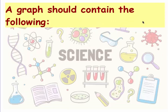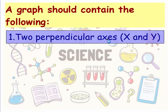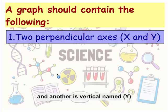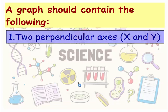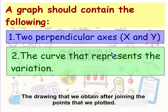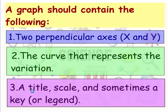A graph should contain the following elements. First, two perpendicular axes — x and y. One is horizontal, which is the x-axis, and the other, which is vertical, is the y-axis. Second, the curve that represents the variation, done by plotting some points and joining these points together.